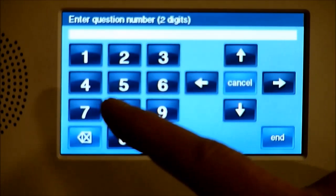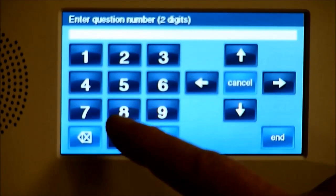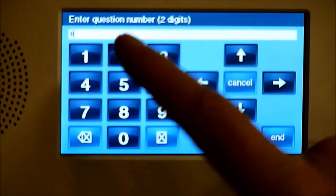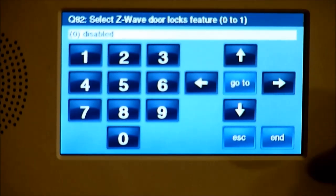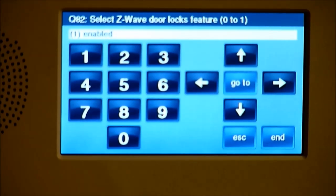And then we'll hit Go to, if you're interested in doing locks as well, 82. And change that to Enabled as well by hitting that right scroll arrow once again.